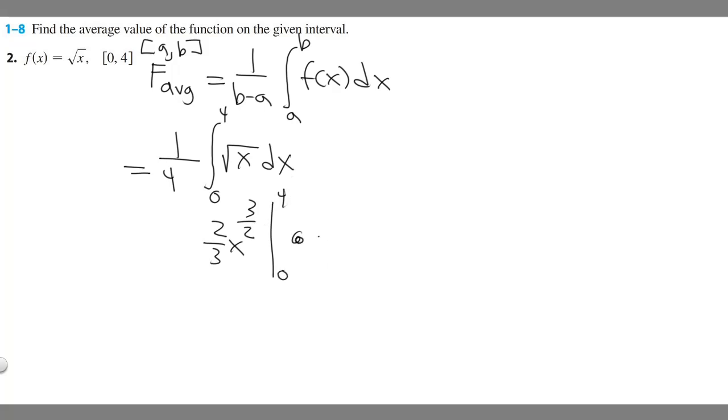So we're going to plug in 4, get a value, subtract whatever 0 is, but when we put 0 in, it's just going to be 0, so essentially we're just plugging in 4. So if you take 4, plug it in, 4 raised to the 3 over 2 is going to be 8, and then if you want to multiply it by 2 over 3, it's going to be 2 over 3 times 8.